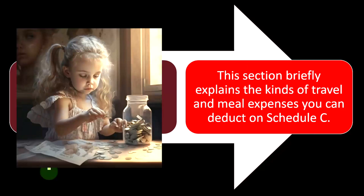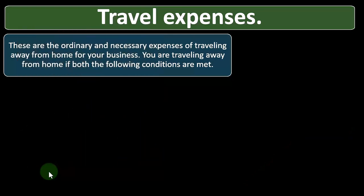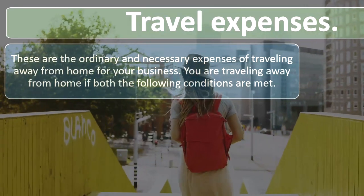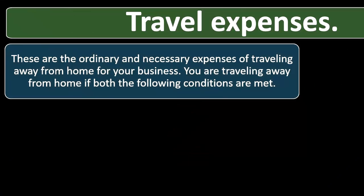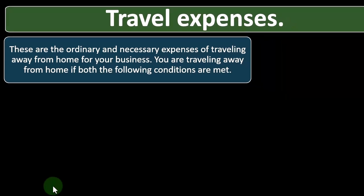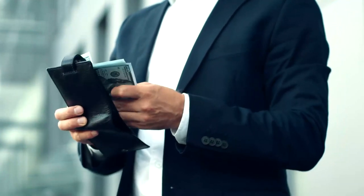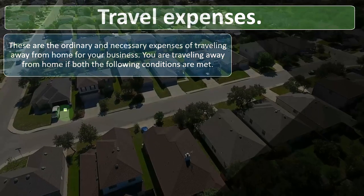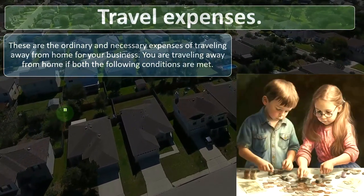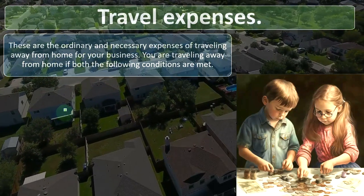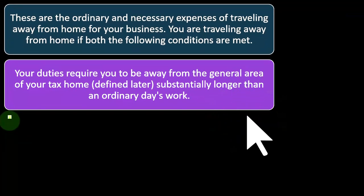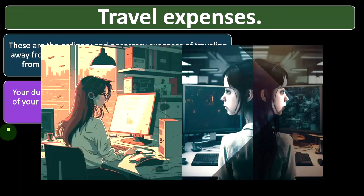This section briefly explains the kinds of travel and meal expenses you can deduct on Schedule C. Travel expenses are the ordinary and necessary expenses of traveling away from home for your business. You are traveling away from home if both conditions are met: your duties require you to be away from the general area of your tax home substantially longer than an ordinary day's work — so it's not just a commuting situation.